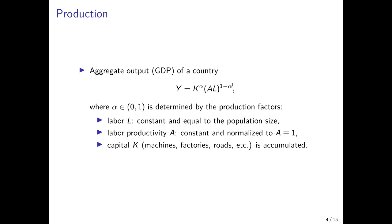The first thing we have to do when formalizing the idea that physical capital accumulation drives economic growth is to define how output is produced. If we assume a closed economy, then aggregate output equals GDP, denoted uppercase Y. Output is a function of capital K, labor L, and labor productivity A. The exponents in the production function are alpha — the output elasticity of capital — and 1 minus alpha, the output elasticity of labor.